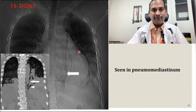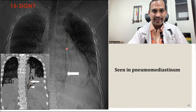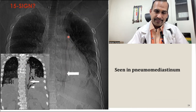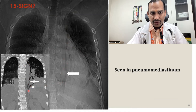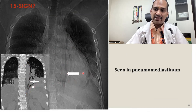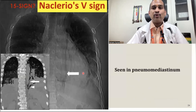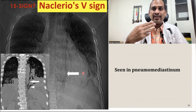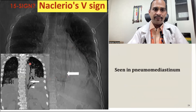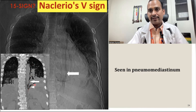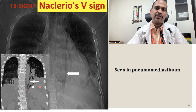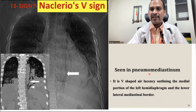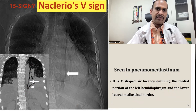Sign 15 is the Naclerio V sign. You can see hyperlucency beside the mediastinum continuing towards the diaphragm, on the left heart border. This is also seen in pneumomediastinum. There is an air column at the border of the mediastinum, below the heart on the left side. This is a V-shaped air lucency outlining the medial border of the left hemidiaphragm and the lower lateral mediastinal border — the Naclerio V sign.